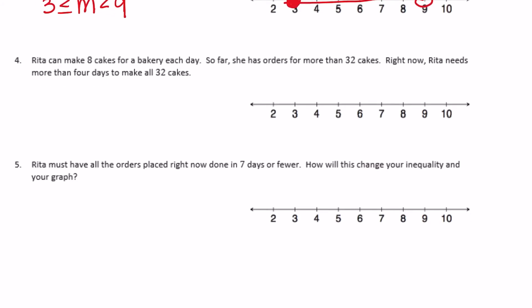Number 4: Rita can make eight cakes for a bakery each day. So far she has orders for more than 32 cakes. Rita needs more than four days to make all 32 cakes. So Rita needs more than four days — I circle four on the graph and leave it open because she needs more than four, not equal to four.